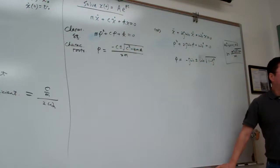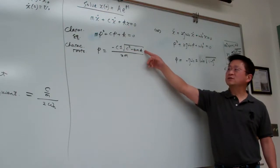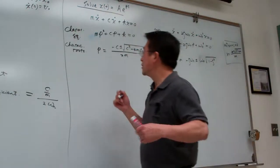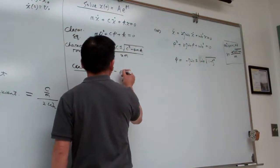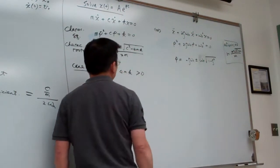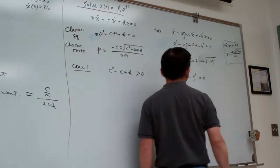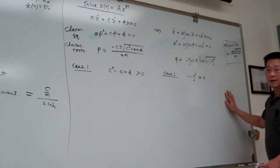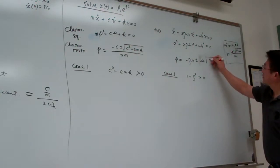As you may remember from the differential equations review, the next step depends on what is inside the square root — we will have different situations to discuss individually. Case 1 depends on whether c² - 4mk is positive, or equivalently whether zeta² - 1 is positive. Note: I made a mistake earlier — it should be zeta² - 1, not 1 - zeta². Please correct that.